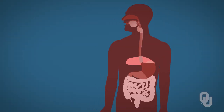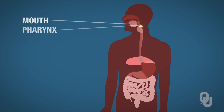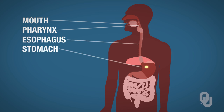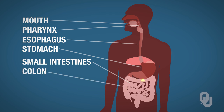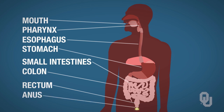Going in order in which they occur, we'll begin with the mouth. Once food enters the mouth, it has to pass through the pharynx, which is often referred to as the throat. Then through the esophagus, down to the stomach, through the small intestines, then to the colon, then to the rectum, and finally undigested products exit out the anus.